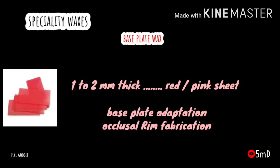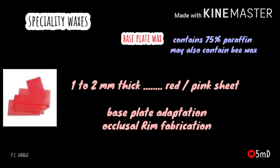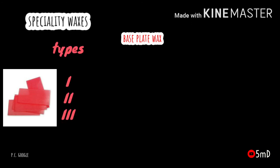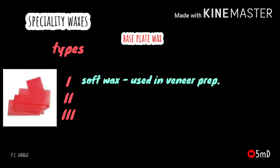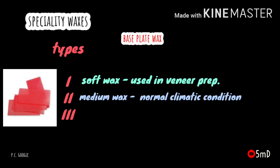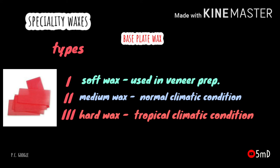Baseplate wax is used in the fabrication of occlusal rims or adaptation of a baseplate. It comes in 1 to 2 mm thickness red or pink sheets, and is composed mainly of 75 percent paraffin; it can also contain beeswax or ceresin. There are three types depending on hardness: Type 1 is a soft wax used for building veneer, Type 2 is the medium wax used in normal climatic conditions, and Type 3 is a hard wax used in tropical climatic conditions.